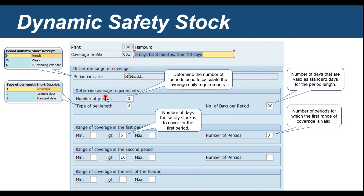The number of periods is defined in the average requirement section. These periods are used to calculate the average daily requirements for that particular safety stock. In this example, I have defined the period indicator as month and the number of periods as three, so the first three PIRs will be considered in the range of coverage calculation. For the period length, the dropdown options are: 1 for work days, 2 for calendar days, or 3 for standard days. Here I am using period length 3, which is standard days.